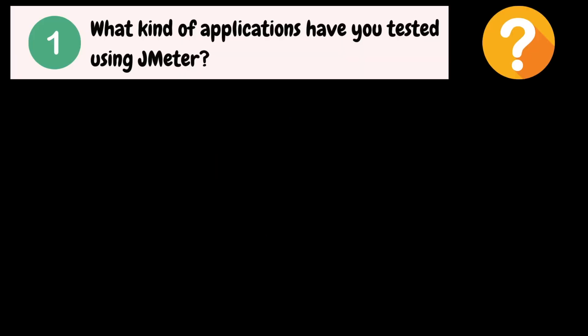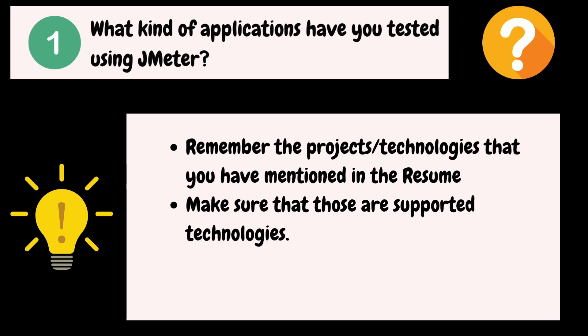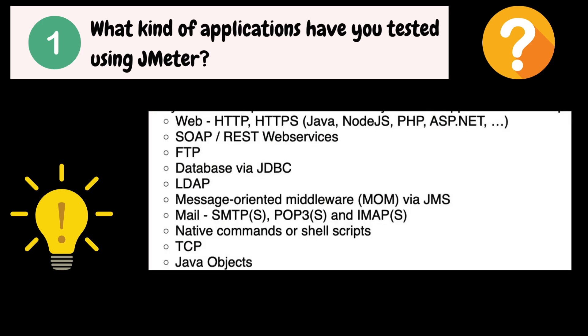What kind of applications have you tested using JMeter? Here, they want to make sure that the projects and technologies you mentioned are correct. Please double check all the projects and technologies listed in your resume. Also check for any typos and make sure to include only the technologies that JMeter supports. Here are the different technologies that JMeter supports as of now — this list may grow with new versions, so please refer to the Apache official website and validate your resume accordingly.